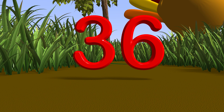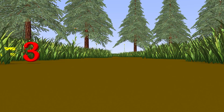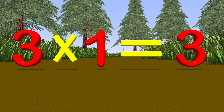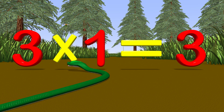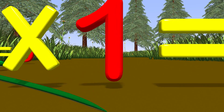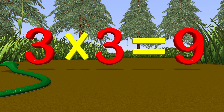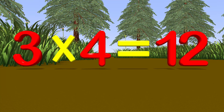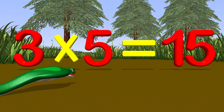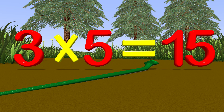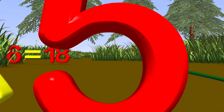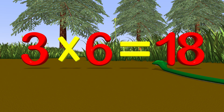Great! Now let's go through them again using multiplication. Three times one is three. Three times two is six. Three times three is nine. Three times four is twelve. Three times five is fifteen. Three times six is eighteen.